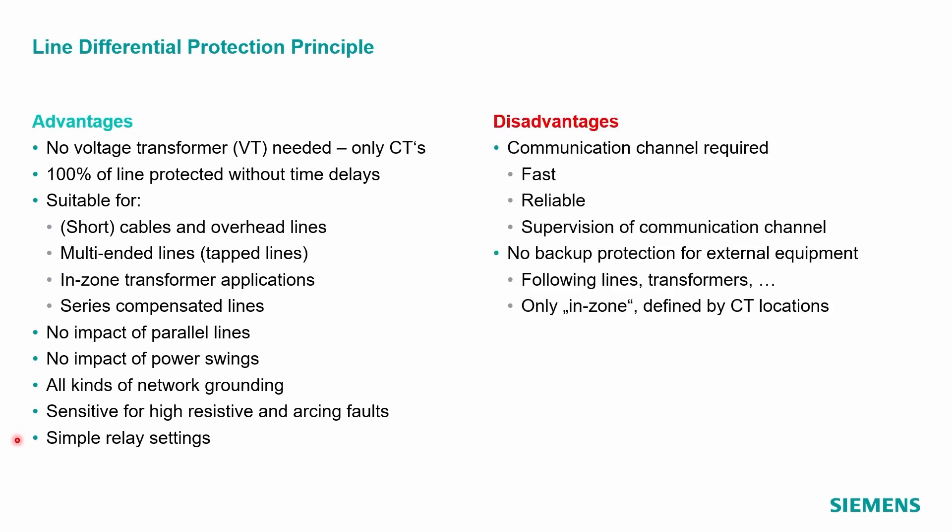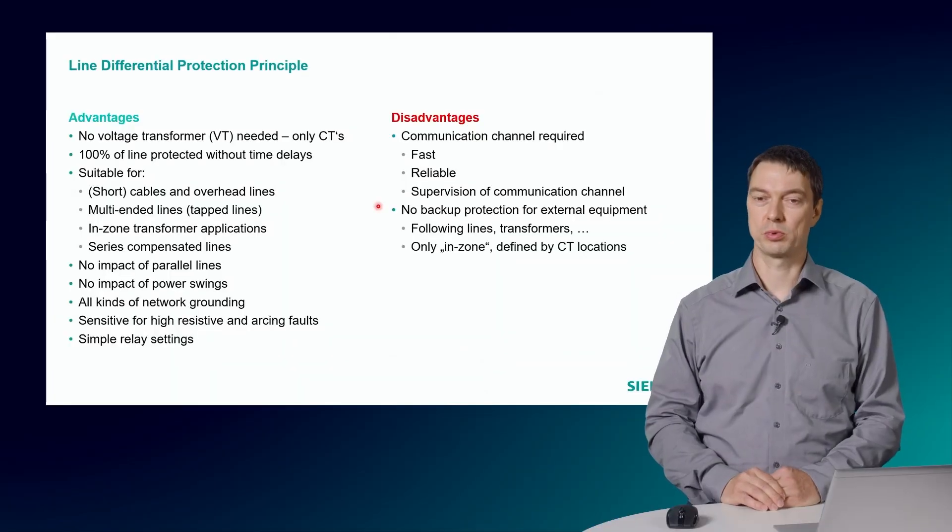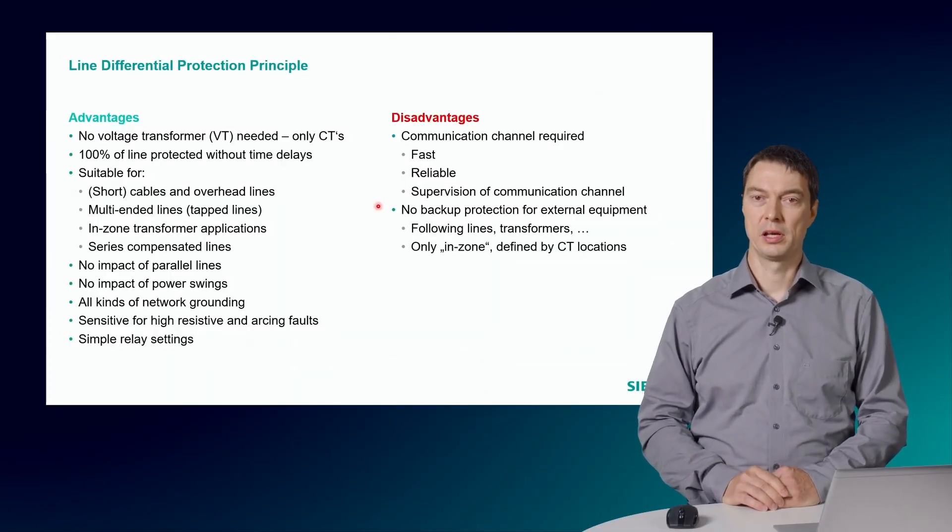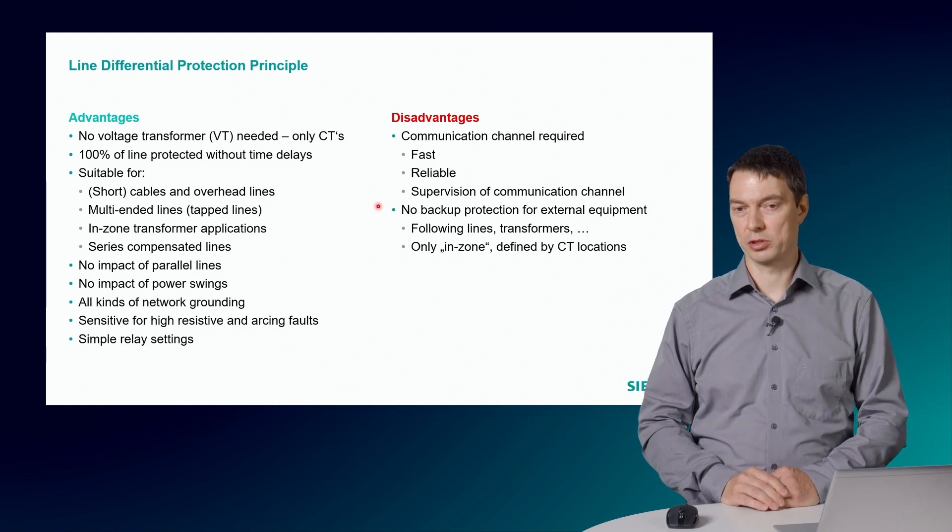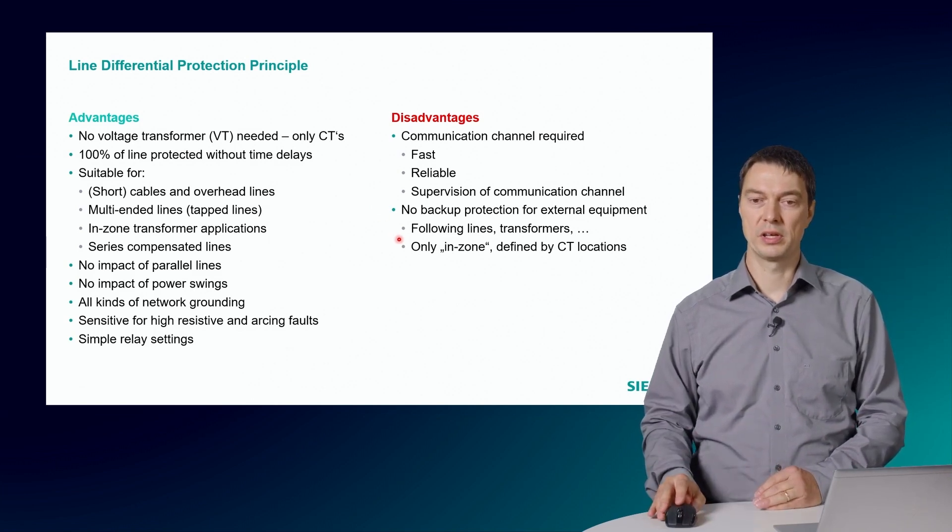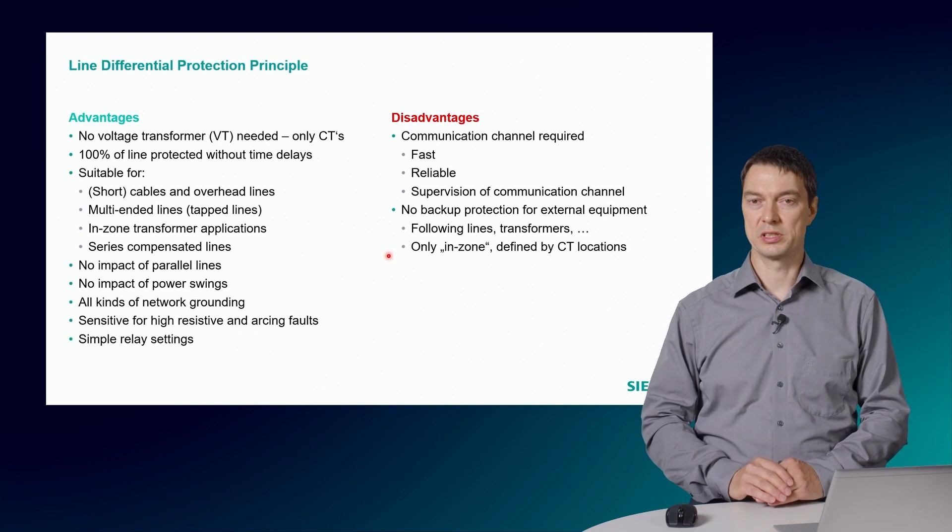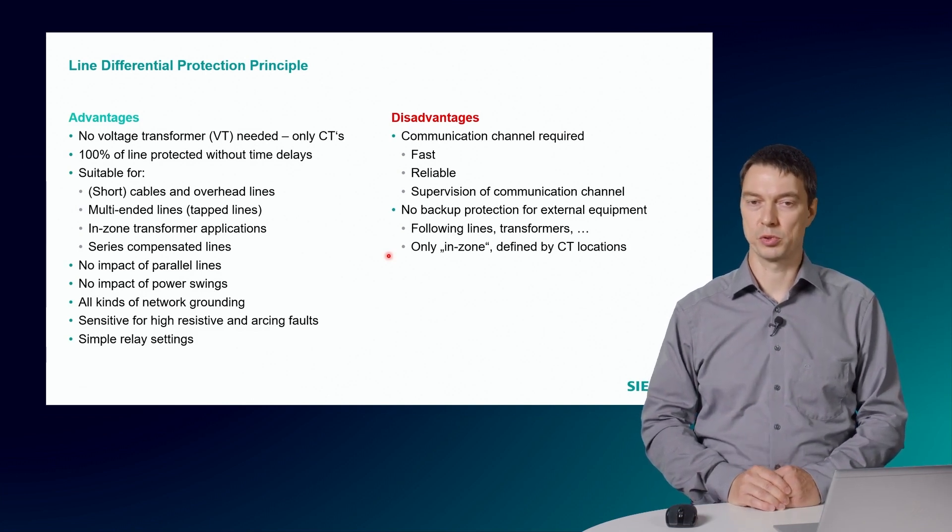On the other side, there are also some disadvantages to mention. First of all, you need a communication channel for this protection principle, which needs to be fast, reliable and it should be possible to supervise this communication channel. The Line Differential Protection is a unit protection. That means also that it does not provide a backup protection for external equipment like following lines or transformers. Only the equipment in the zone, which is delimited by the location of the current transformers, is protected.